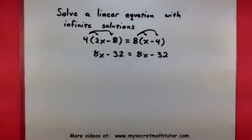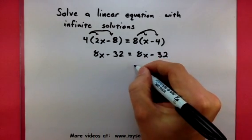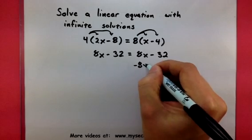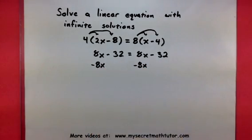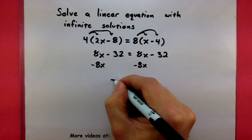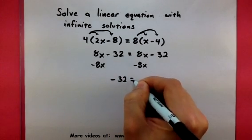And imagine trying to get these x's together. Well, in order to do so, I might subtract 8x from both sides. Now, as soon as I do so, both of my x's are now gone.